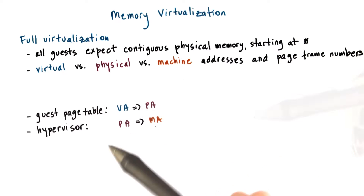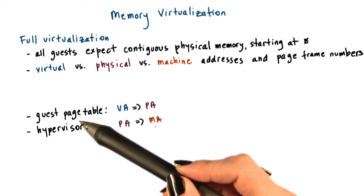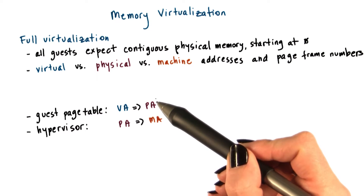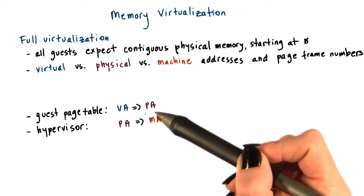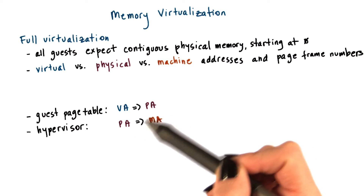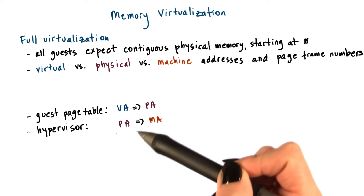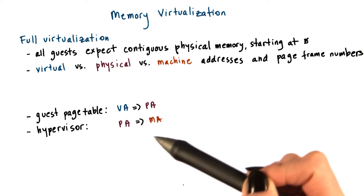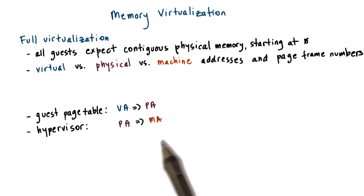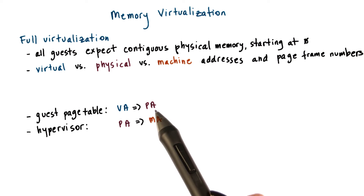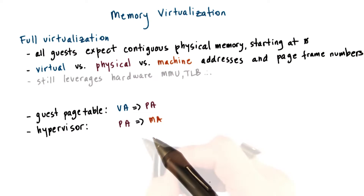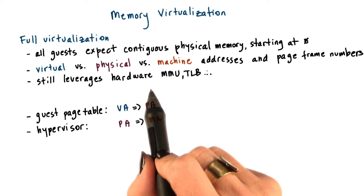Given this, the guest operating system can continue to make mappings of virtual addresses to the physical addresses that it thinks it owns. Underneath that, the hypervisor will take these physical addresses that the guest believes are real and map them to the real machine addresses. So in a sense there are two page tables: one maintained by the guest operating system and another maintained by the hypervisor.